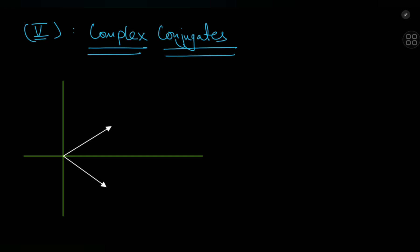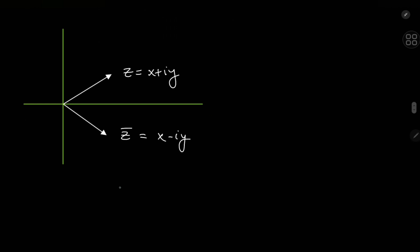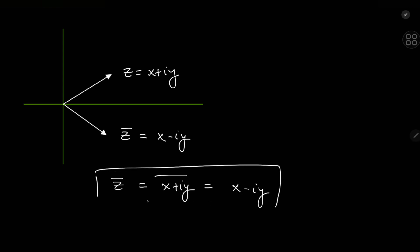Another cool thing about complex numbers is the existence of complex conjugates. Given any vector z = x + iy, if you reflect this vector in the real axis, what you get is z̄, called the complex conjugate of z, and this equals x − iy. So complex conjugation just means reversing the sign of the imaginary part. This implies that z̄ conjugated again is just z.